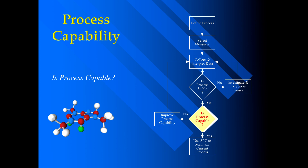If the process is unstable, investigate. Do the root cause analysis and fix it. Once the process is stable, go to process capability.